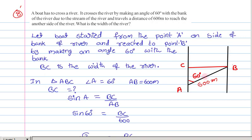That means AB length is given as 600 meters, and we need to find out the width of the river. That means we need to find out this base length. So this will be perpendicular to the bank.